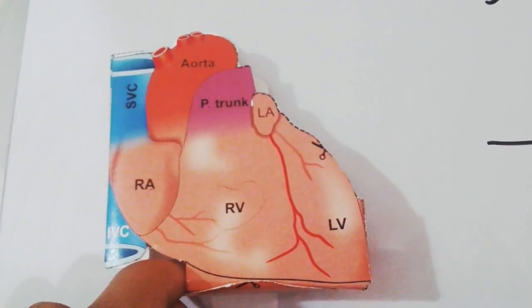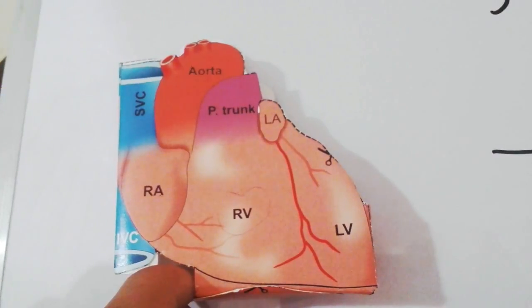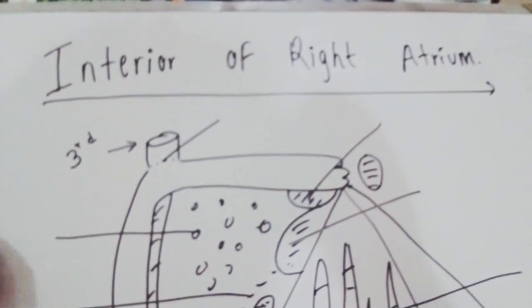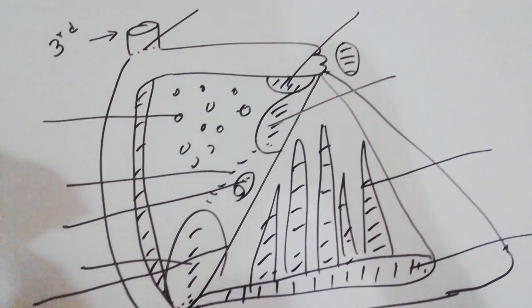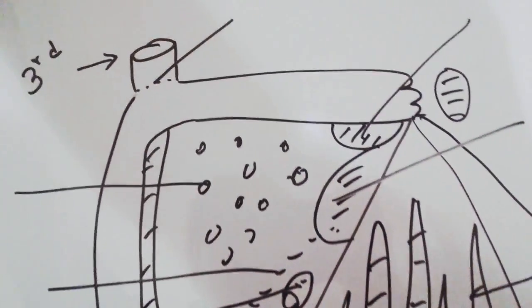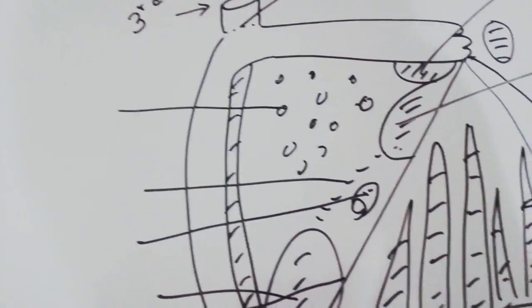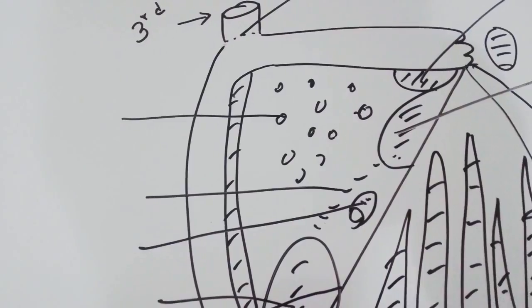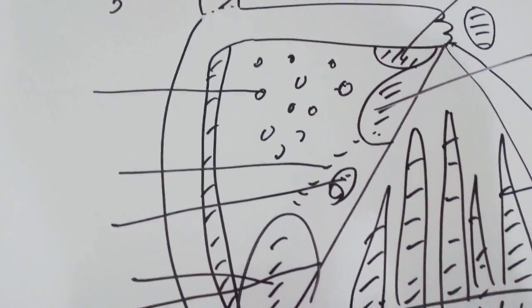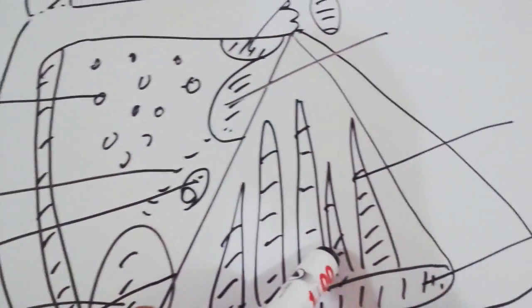The right atrium extends from the right third costal cartilage to the right sixth costal cartilage. Here is the interior of the right atrium. The right atrium consists of a posteriorly smooth part and an anteriorly rough part — this is the posterior smooth part and anterior rough part.